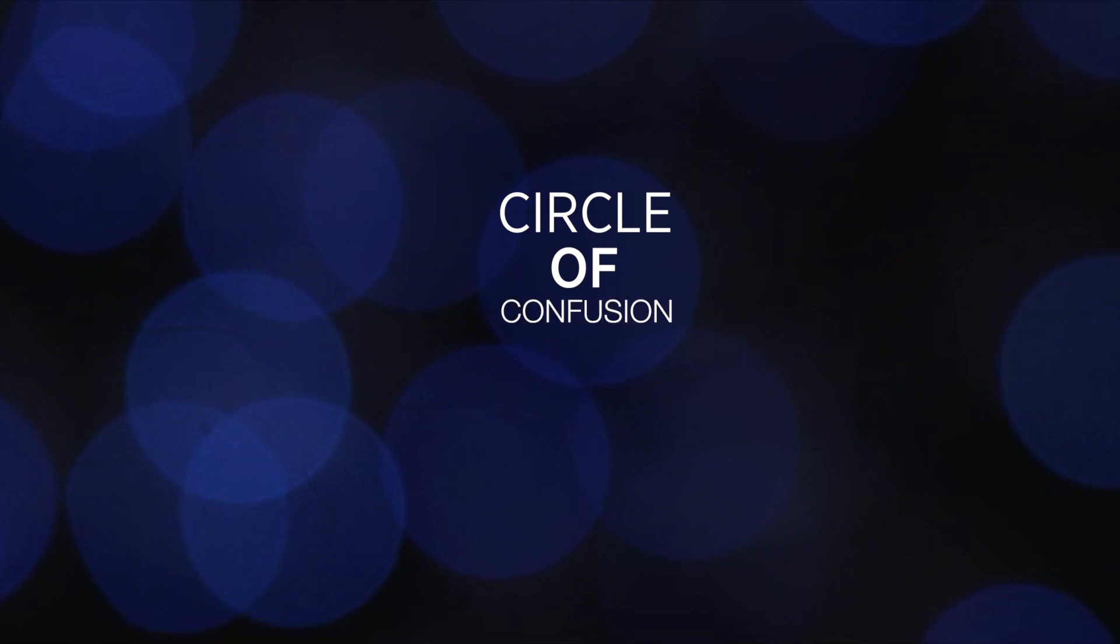When a point in an image is out of focus, it grows into a blurry circle known as the circle of confusion. In this lesson, we'll develop the algebraic equations which tell us exactly where things come into focus and how big the circle of confusion will be if something isn't in focus.